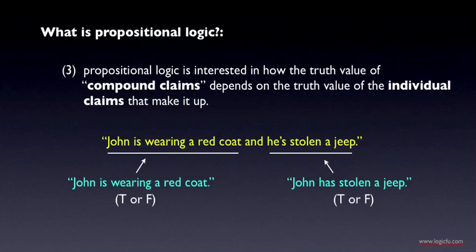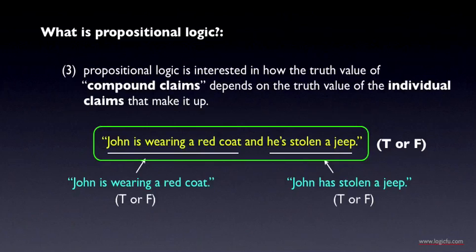Now from the standpoint of propositional logic, what's really interesting about this example is that the compound claim as a whole is also a proposition that can be true or false. In this case, it turns out that the compound claim as a whole is true just in case both of the component claims turn out to be true. If either one is false, then the compound claim as a whole will be false. So if it turns out that John has stolen a jeep, but he's actually wearing a blue coat, then the compound claim circled in green is false. This is an illustration of the general point being made in point number three above here, that propositional logic is concerned with the way that the truth value of compound claims is a function of the truth value of the individual component claims.